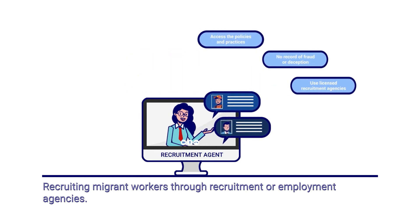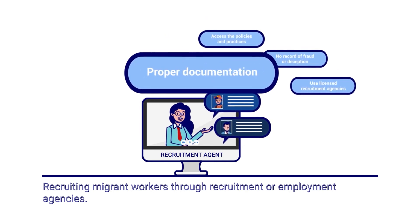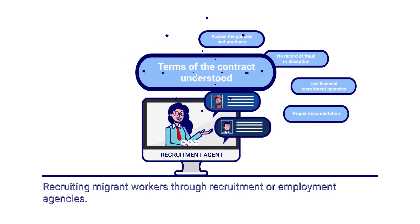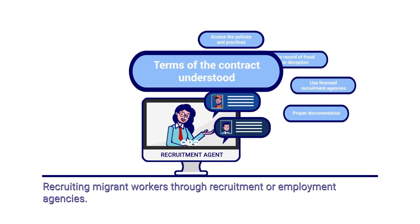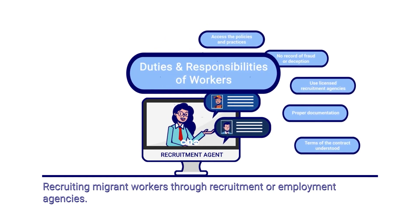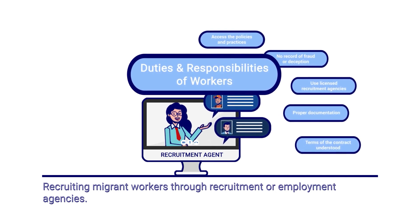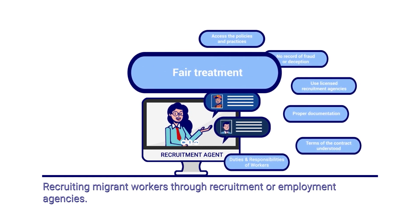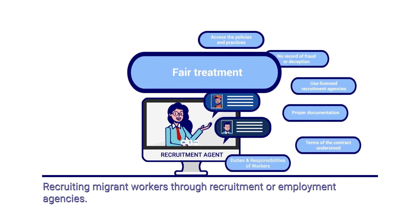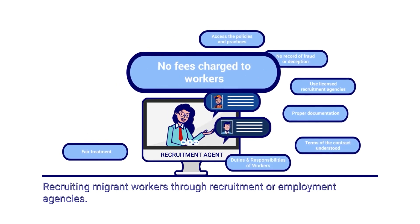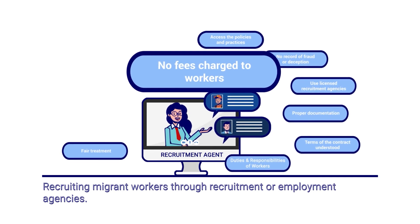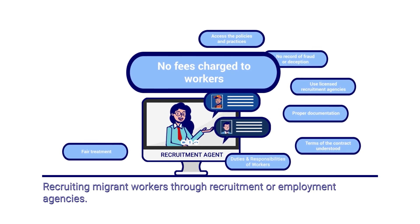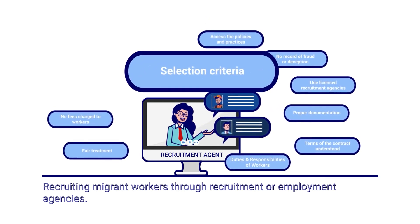Employers should ensure the workers have proper documentation and have completed all legal procedures in source countries, that the terms of the employment contract accurately reflect the actual work and are in a language understood by the worker, that all workers are treated fairly during the recruitment process, and that the agency does not impose fees on the workers in compliance with the general principles and operational guidelines on fair recruitment. Employers should also ensure the workers meet the selection criteria.